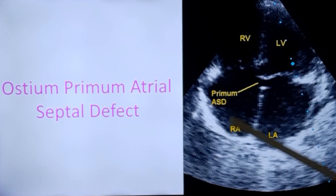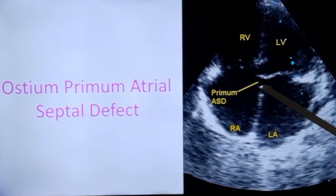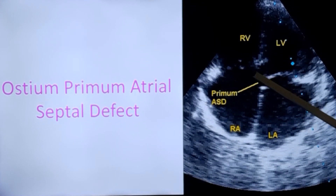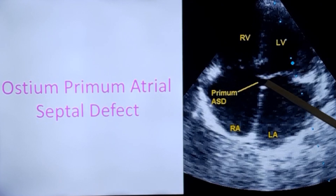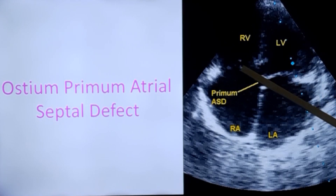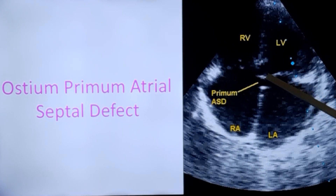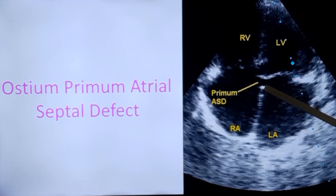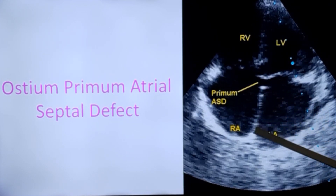This is an ostium primum atrial septal defect. You can see that there is no rim of tissue between the atrioventricular valves — the mitral valve here and the tricuspid valve here. There is no rim between the ASD and the AV valves, while the rest of the atrial septum is intact.